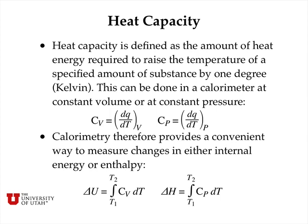Heat capacity is defined as the amount of heat energy required to raise the temperature of a specified amount of substance by one degree, usually Kelvin. This can be done in a calorimeter at constant volume or at constant pressure — it's more common at constant pressure, but gases can be measured at constant volume easily. Calorimetry provides a convenient way to measure changes in either internal energy or enthalpy. For a constant-volume calorimeter, you integrate the heat capacity over a temperature change from T1 to T2 to get delta U. For a constant-pressure calorimeter, you do the same integration of heat capacity at constant pressure over T1 to T2, giving you delta H.